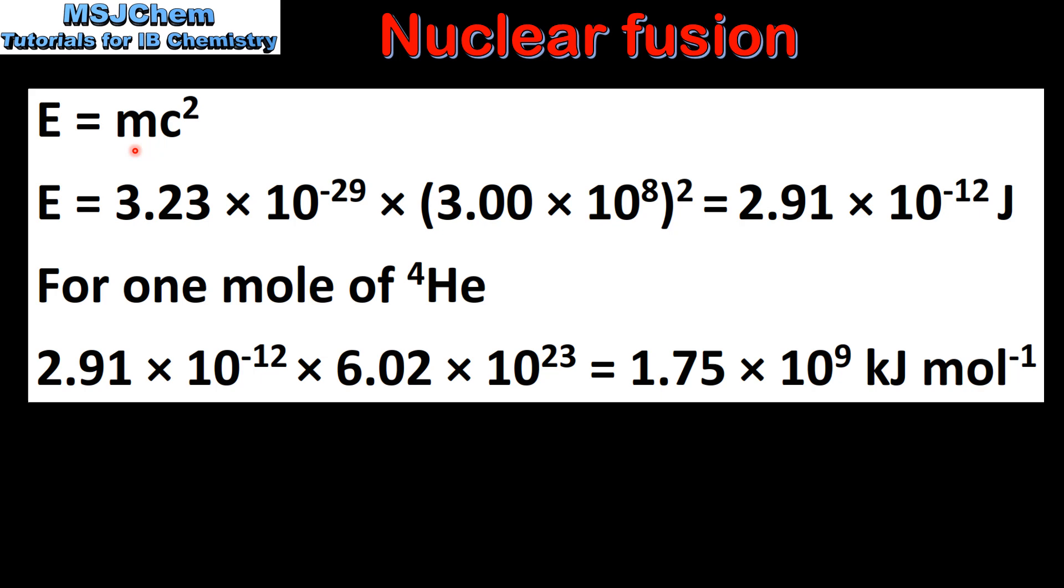In this equation M is the mass defect in kilograms and C is the speed of light. So the mass defect was 3.23 times 10 to the negative 29 kilograms and we multiply this by the speed of light squared which gives us 2.91 times 10 to the negative 12 joules.